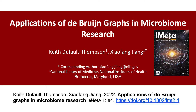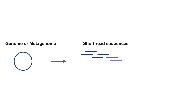Microbiome research is becoming increasingly reliant on high-throughput sequencing methods, leading to the development of new algorithms and tools that can help us answer fundamental biological questions about microbial communities using sequencing data. One of the central problems of sequencing is how to take the short reads produced by sequencing platforms and assemble them into larger sequences that can then be analyzed. This process, called assembly, is often done through the construction of a network representation of the sequencing reads called a de Bruijn graph.